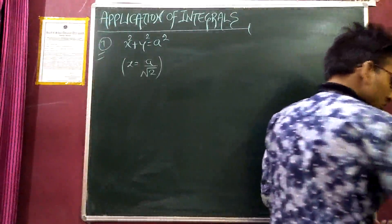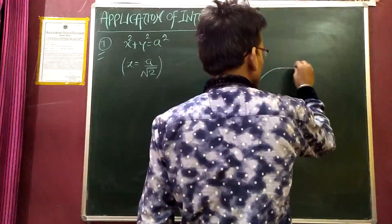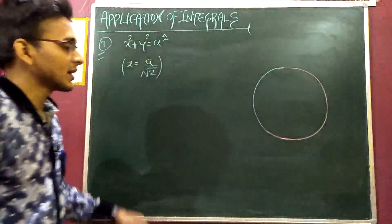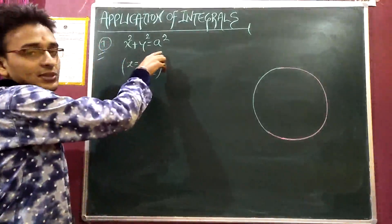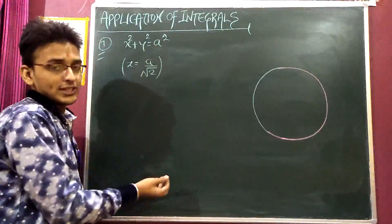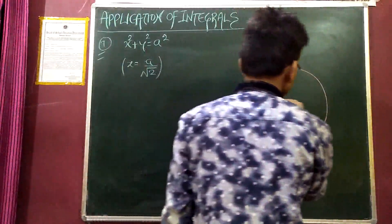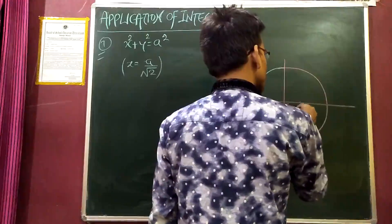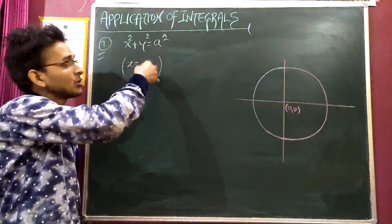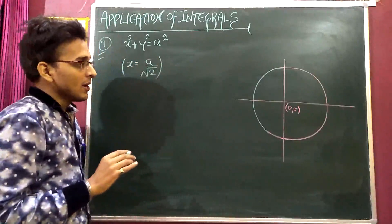If I draw a circle, the standard circle has center at origin. Comparing x squared plus y squared equals a squared with the standard form x squared plus y squared equals r squared, the radius r equals a, and the center is at the origin. We need to find the smaller region of the circle cut off by the line x = a/√2.